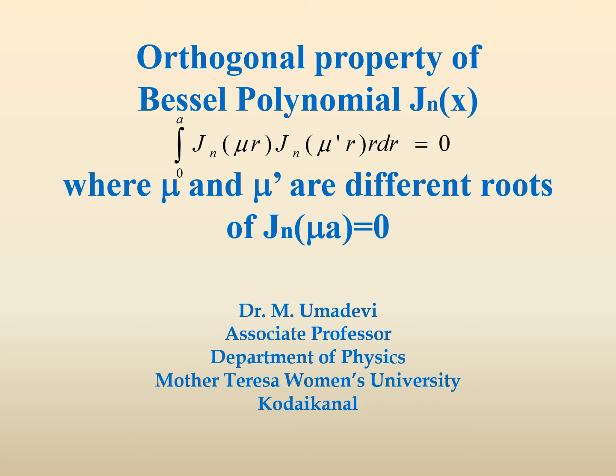We will derive the orthogonal property of Bessel polynomial Jn(x). That is, to show that the integral from 0 to a of Jn(μr) · Jn(μ'r) dr is equal to 0, where μ and μ' are different roots of Jn(μa) = 0.